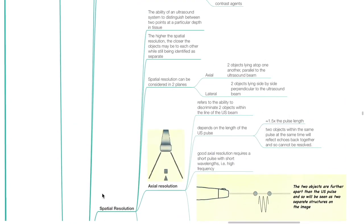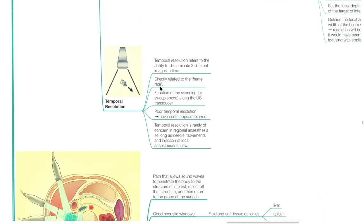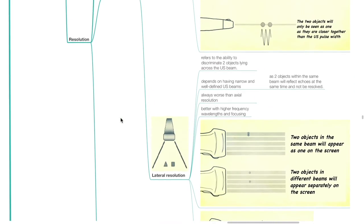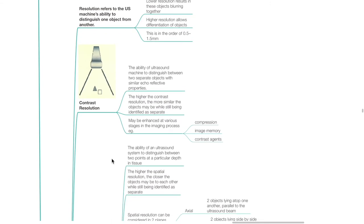Ultrasound resolution refers to the ultrasound machine's ability to distinguish one object from another. Lower resolution results in objects blurring together; higher resolution allows differentiation of objects, in the order of 0.5 to 1.5 mm. There are several types of resolution: contrast resolution, spatial resolution (further divided into axial and lateral resolution), and temporal resolution. Contrast resolution refers to the ability to distinguish between two separate objects with similar echo-reflective properties. The higher the contrast resolution, the more similar the objects may be while still being identified as separate. Contrast resolution may be enhanced during compression, image memory, and through the use of contrast agents.